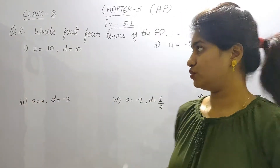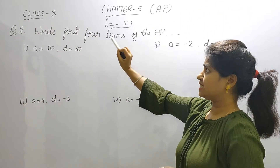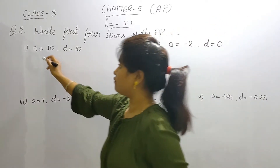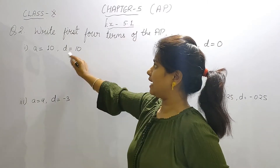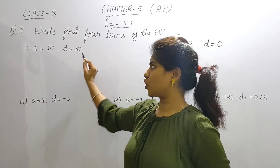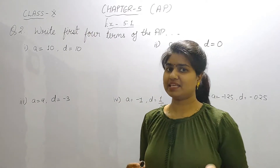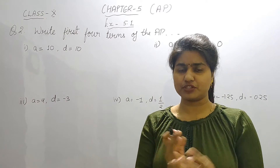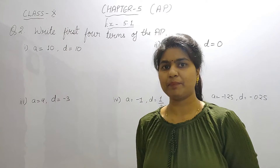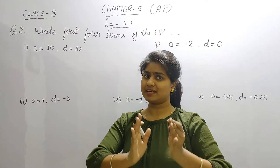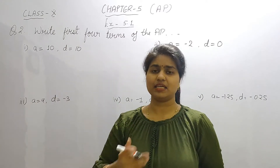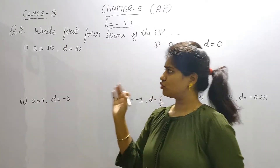In question number 2, we have to write the first four terms of the AP where the first term and D — the common difference — are given. We know that in arithmetic progression, whatever the first term is given, if we add the common difference to the preceding term, then we will get the rest of the terms.